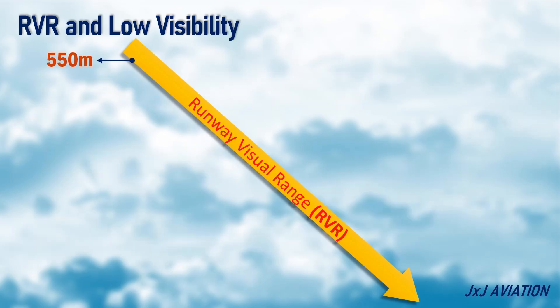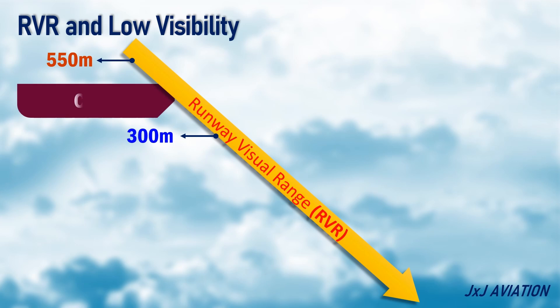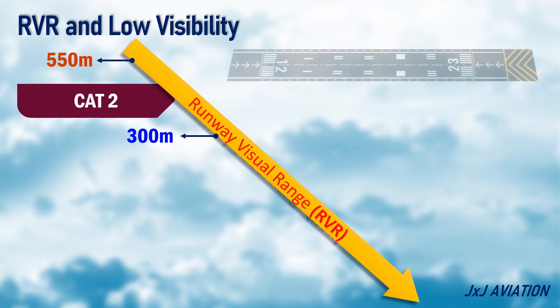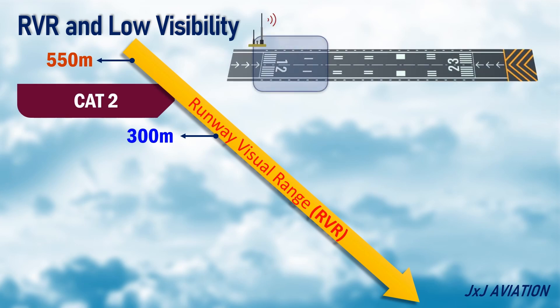When the RVR falls between 550 meters and 300 meters, the category of operation becomes CAT-2. For CAT-2 operations, both touchdown and mid-zone RVRs should be reported.